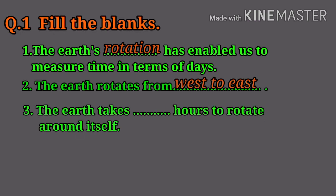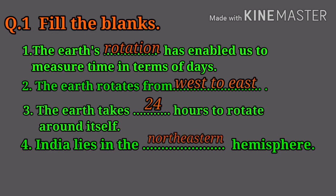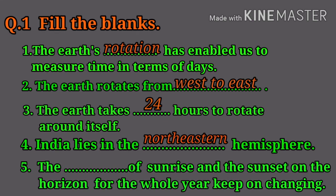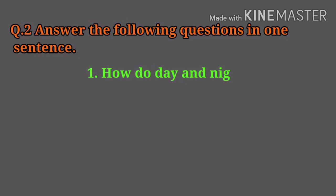Third, the earth takes dash hours to rotate around itself — answer is 24 hours. Fourth, India lies in the dash hemisphere — answer is northeastern. Fifth, the dash of sunrise and sunset on the horizon for the whole year keep on changing — answer is position.